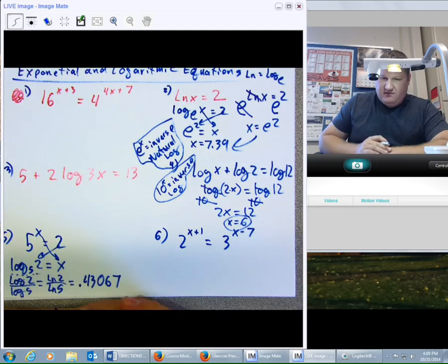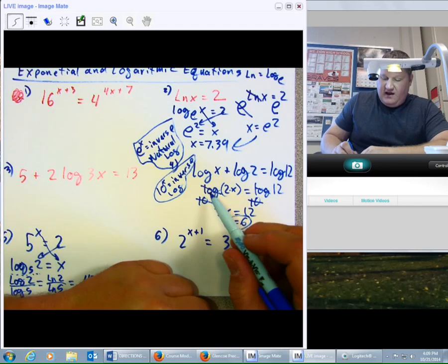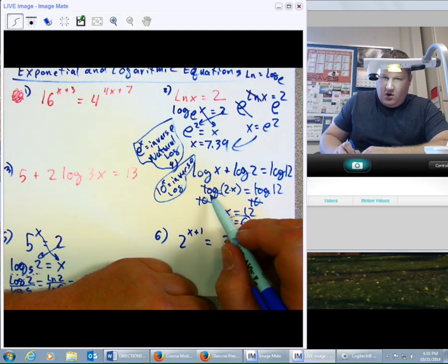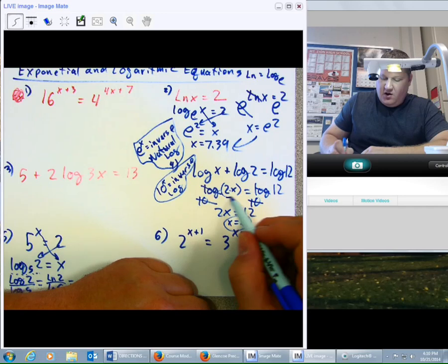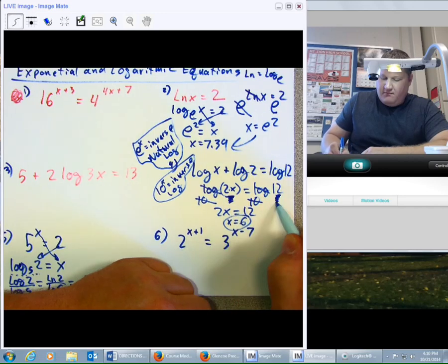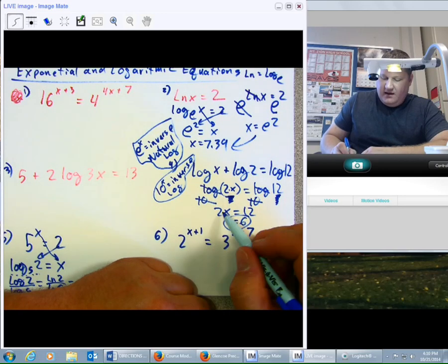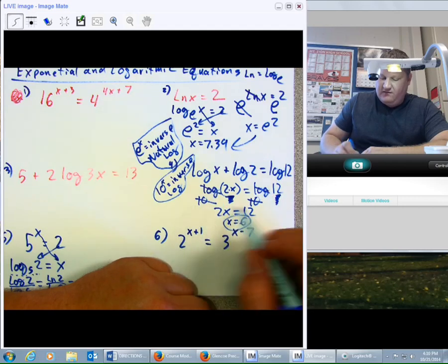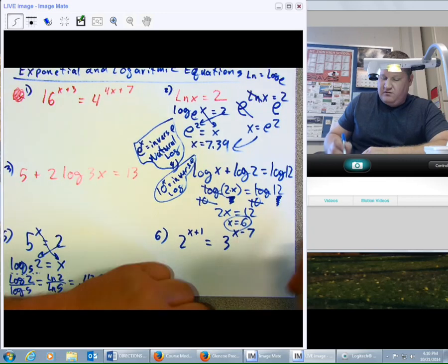Now, another way to think about that is, if I have log of something equals log of something else, as long as the logs are by themselves, whatever's inside the log must be equal. And so it turns out, because I can remove the log from both sides using the inverse log, I end up with 2x equals 12, so therefore, x equals 6.